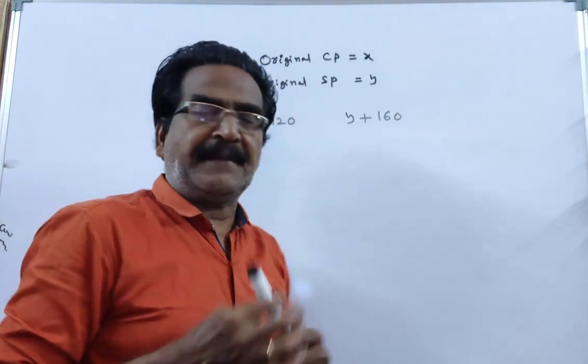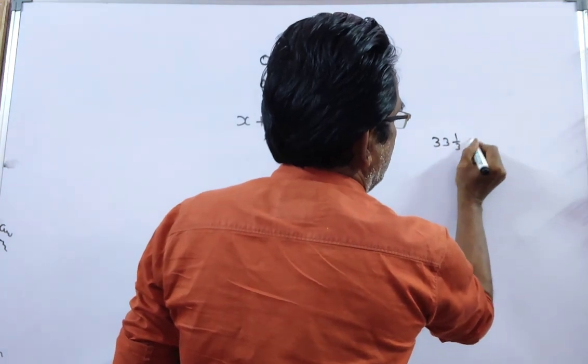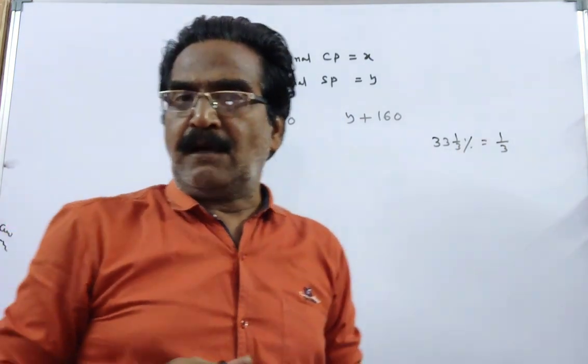33 1 by 3 percent profit means the profit is 1 by 3 of the cost price.